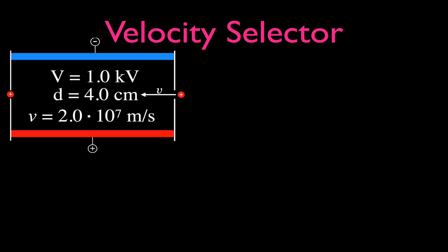This is our velocity selector. We have our negatively charged plate, our positively charged plate, and we have a proton which is positively charged. We're going to assume that proton is selected for the right velocity and travels straight through. The velocity selector has a potential difference of 1,000 volts across those plates, the distance between the plates is four centimeters, and the proton has a velocity of 2.0 times 10 to the 7 meters per second.